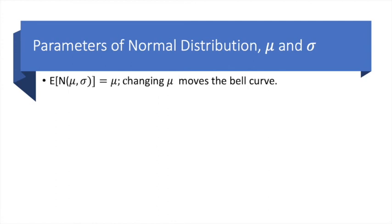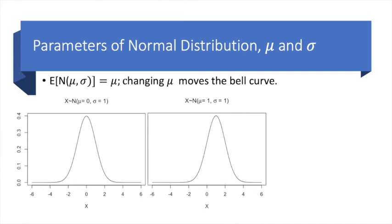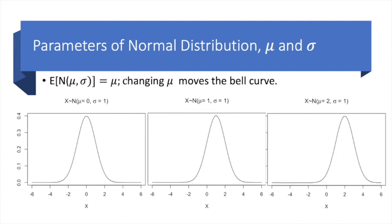The expected value of a normal distribution is its mean value mu. And changing the mean value moves the entire distribution left or right. So if mean equals 0, here is how it looks. If we shift the mean to the right, that is we set mean equals 1, then the distribution shifts to right. Further shifting the mean to 2.0 further shifts the distribution to right.